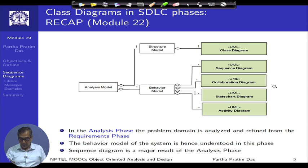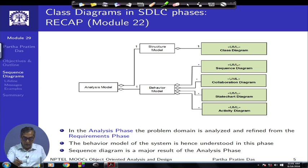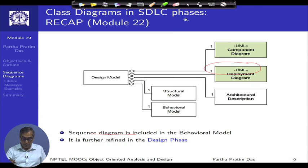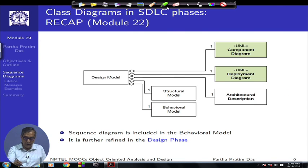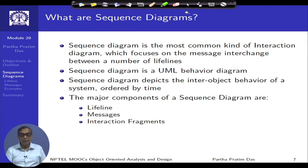These are the different places where the sequence diagram can occur. It can occur in the analysis phase, as we have already seen, and it can occur in the design phase as a behavioral model. So these are the two places — they start featuring from the analysis phase where we first try to capture the dynamic behavior of objects, and in the design phase we would like to refine them more.